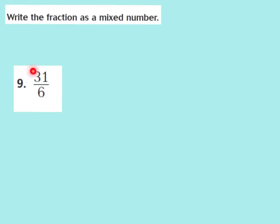For number 9 on page 143, we have 31 sixths, and I can see that it's an improper fraction because the numerator is greater than the denominator. I want to change that to a mixed number, where I'm going to have a whole number and a fraction together. In 31 sixths, I'm going to have to change it into the sum of unit fractions. Unit fractions are taking one unit at a time and adding them together. You don't have to write this down in your GoMath book because it won't fit, so watch how I make 31 sixths into unit fractions.